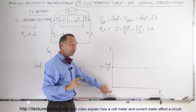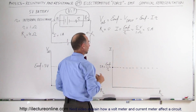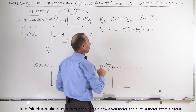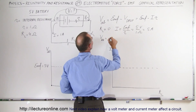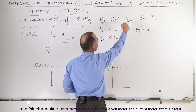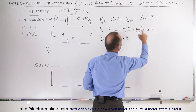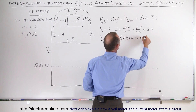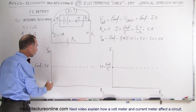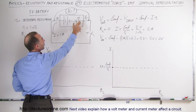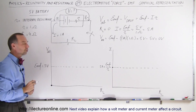So when the load resistor is zero, the current will be 5 amps — that's the EMF divided by the internal resistance. The voltage from A to B equals the EMF minus the voltage drop: 5 amps times the internal resistance of 1 ohm. That equals 5 volts minus 5 volts, which is zero volts. So if there's no load resistor, all the voltage drops across the internal resistance, and V_AB equals zero volts.